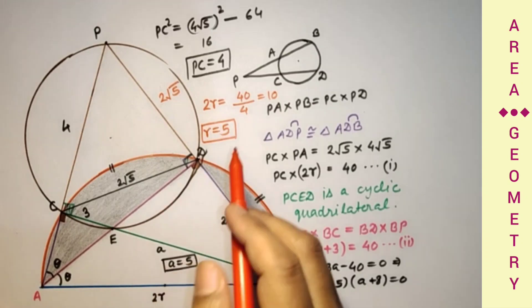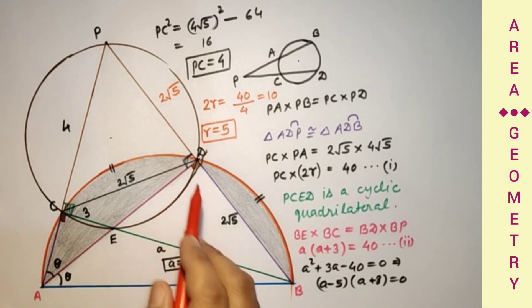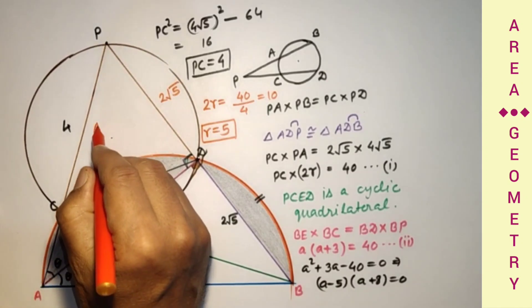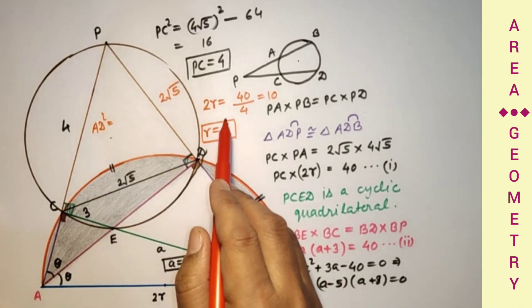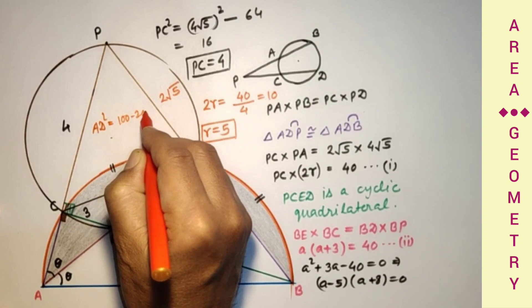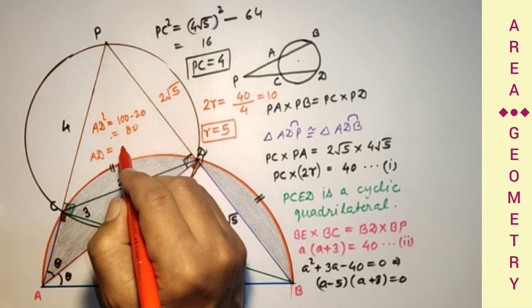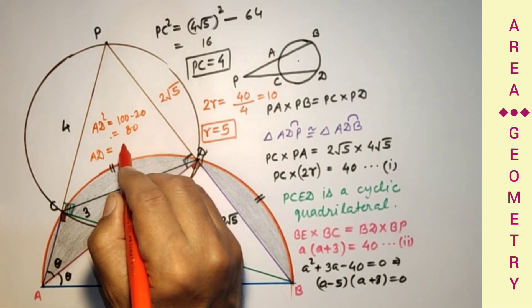To find AD, we use Pythagoras' theorem in triangle ADB where angle ADB is 90°: AD² = AB² − BD² = (2R)² − (2√5)² = 10² − 20 = 100 − 20 = 80. Therefore AD = √80 = 4√5.